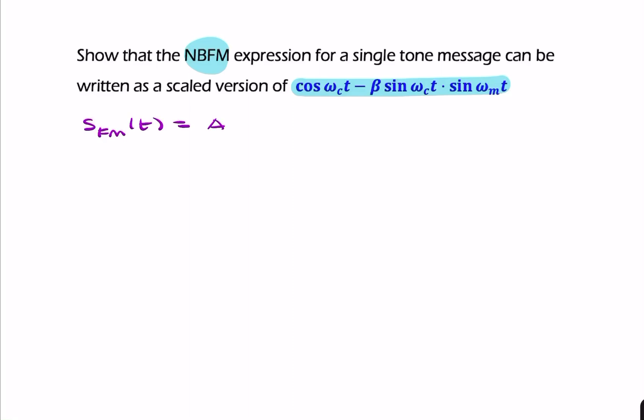the general form for FM looks like this: some amplitude constant times cos(ωct + β sin ωₘt). Because the question says a scaled version and there's no amplitude mentioned, we can simply drop that for now.